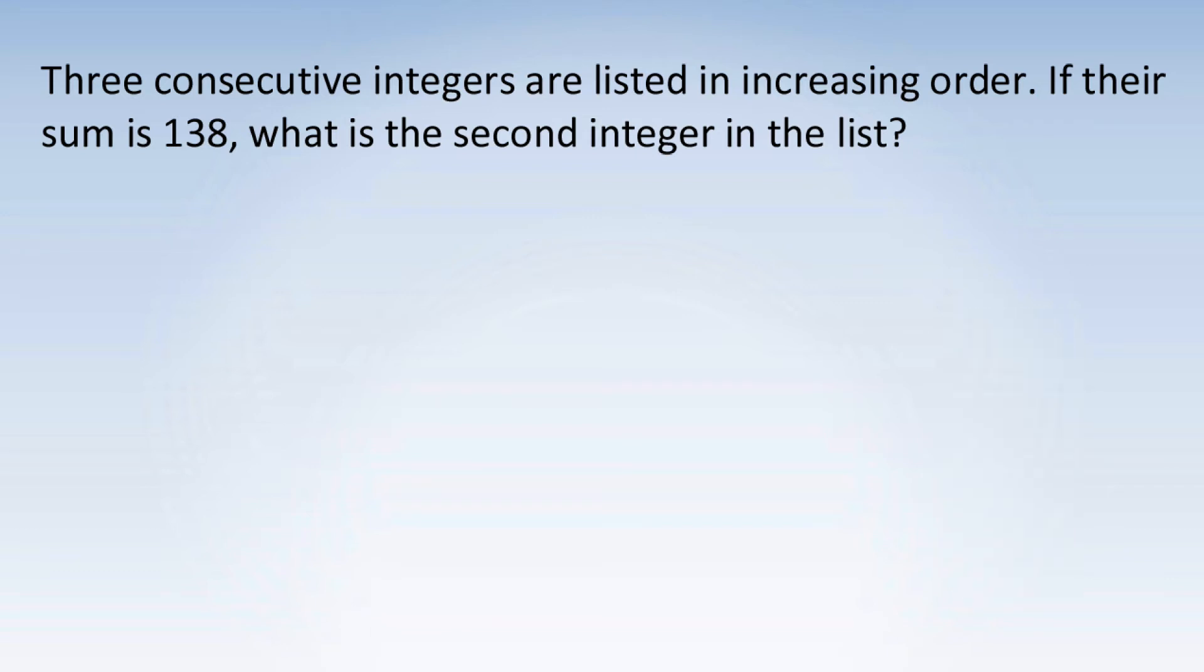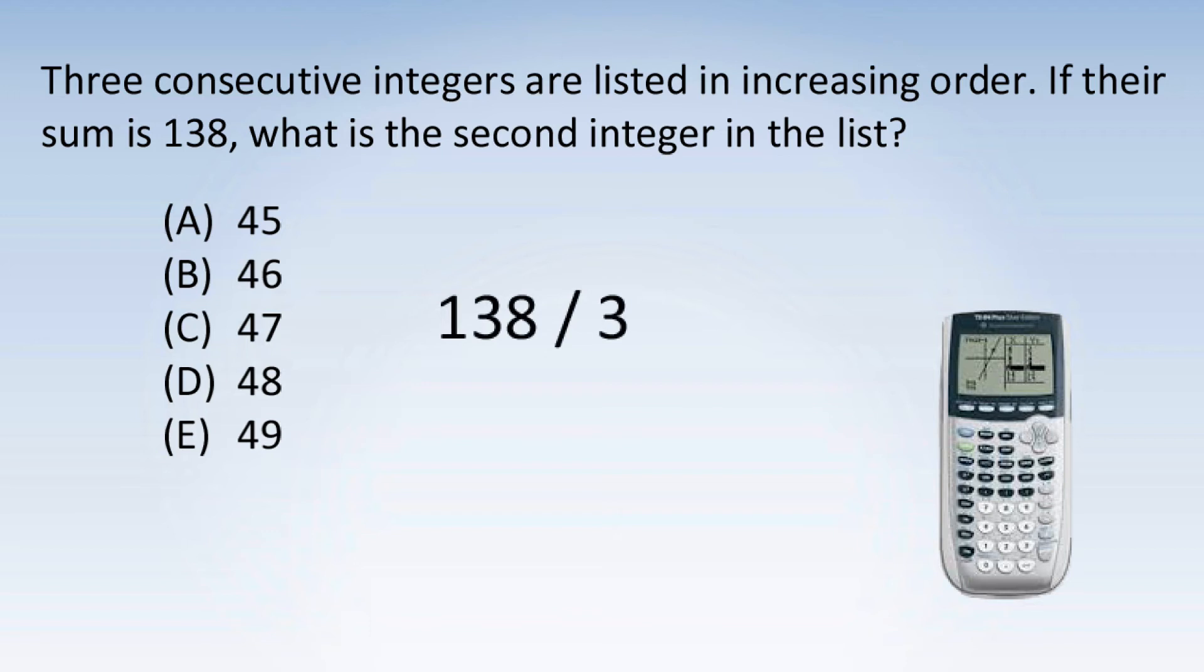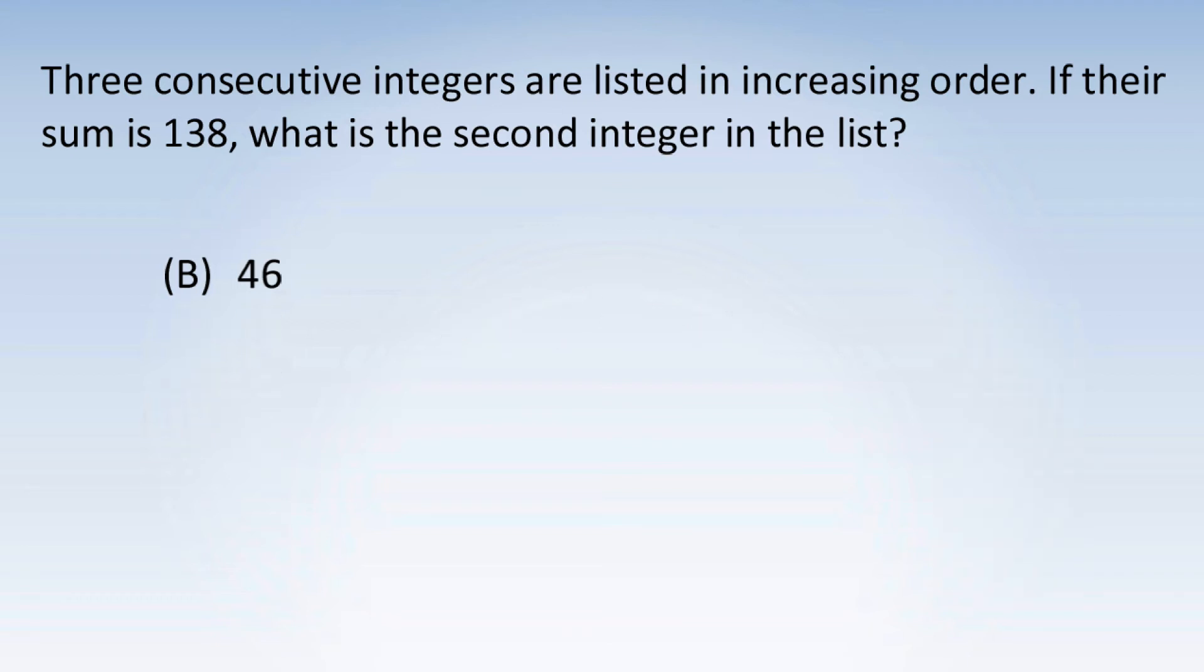I should mention that there is a way to solve this problem in just a few seconds. You can simply divide 138 by 3 to get 46, which is choice B. The reason that this works is because in a list of consecutive integers, the arithmetic mean of these integers is equal to the median of these integers.